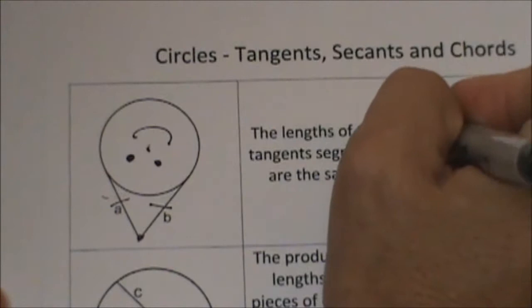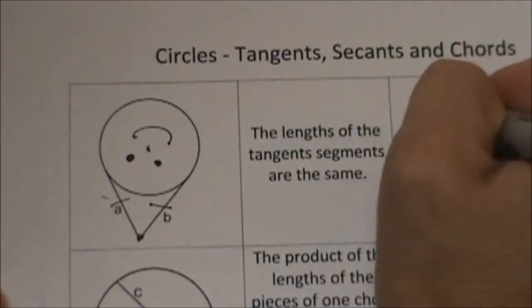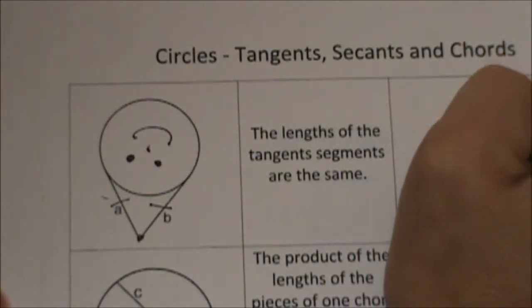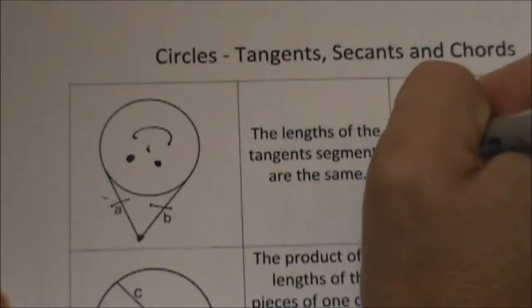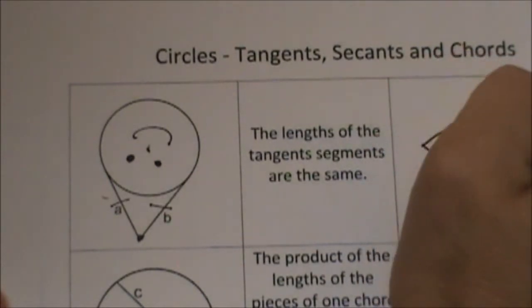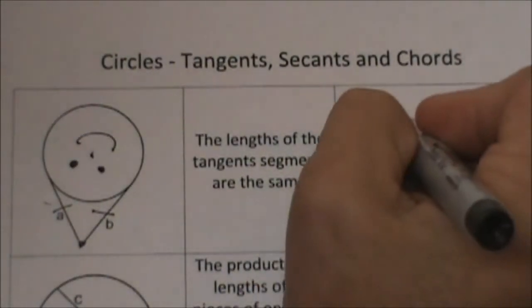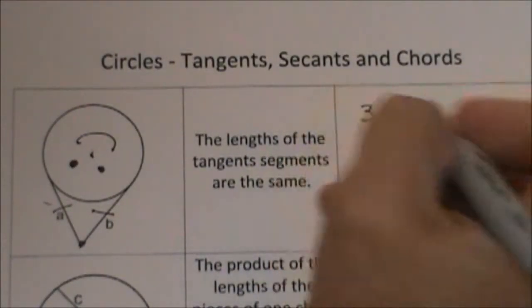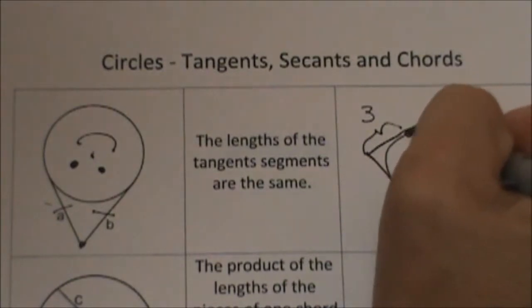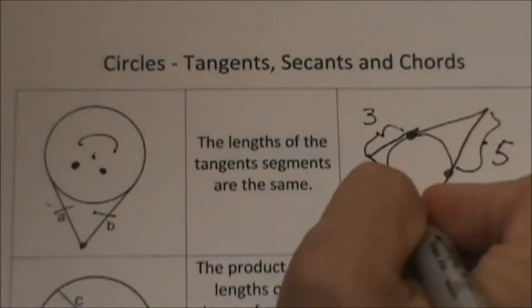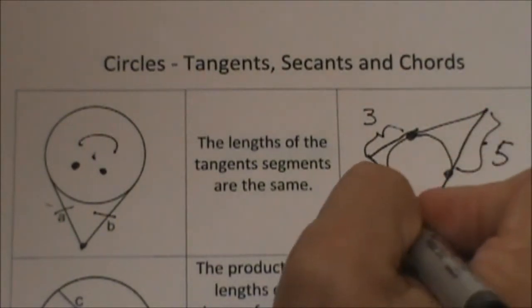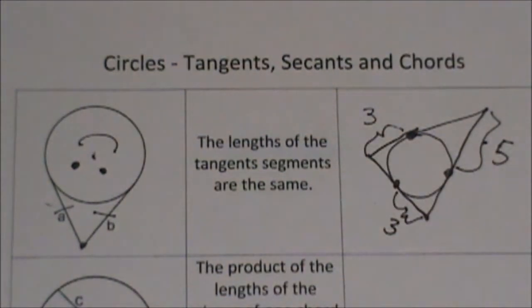So if we know we have a circle and I'm going to draw one with triangles because we looked at one of those. If we have a triangle drawn and we know this segment right here is three, this segment over here is five, and this segment over here is three we can actually find the perimeter.